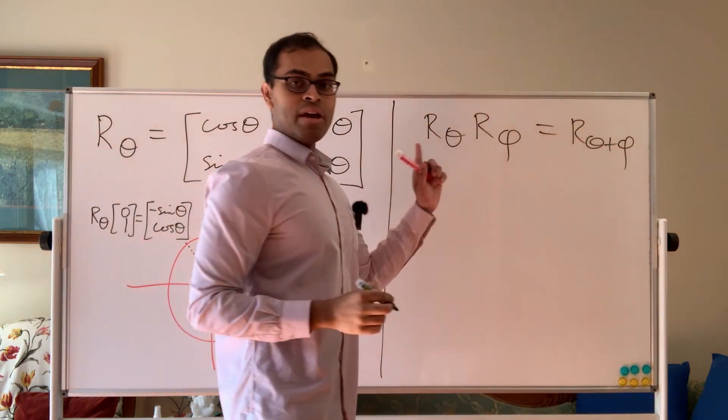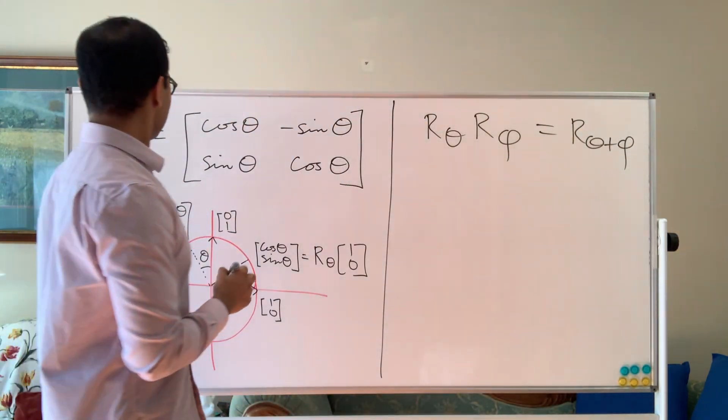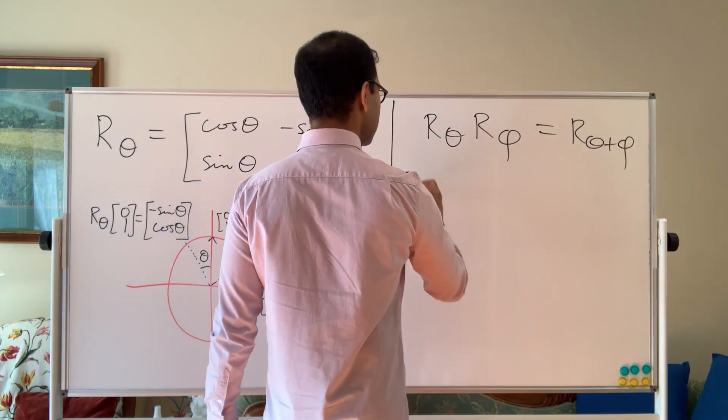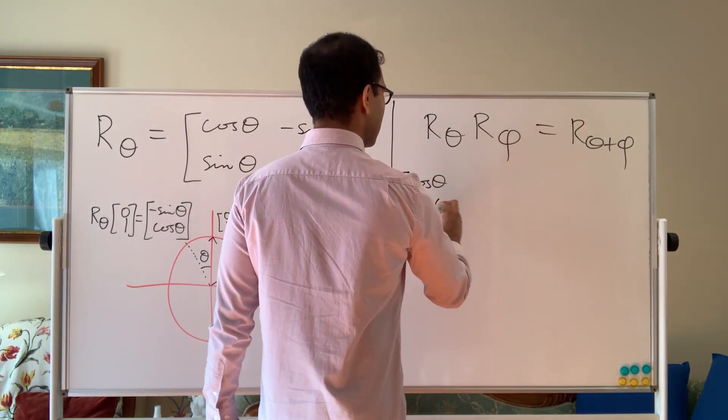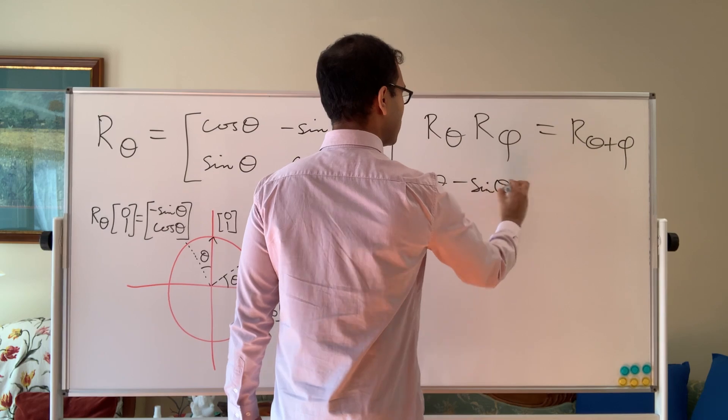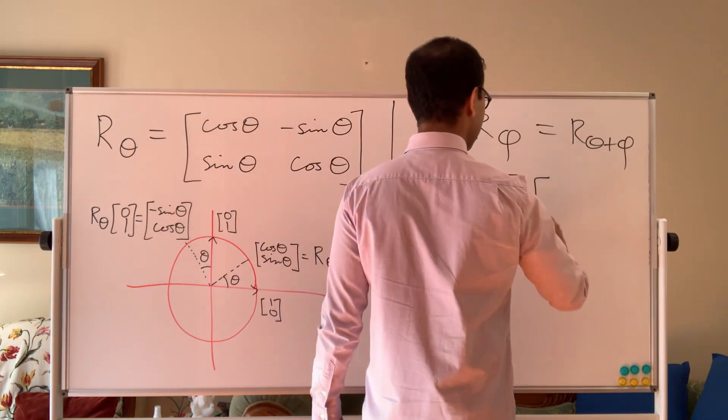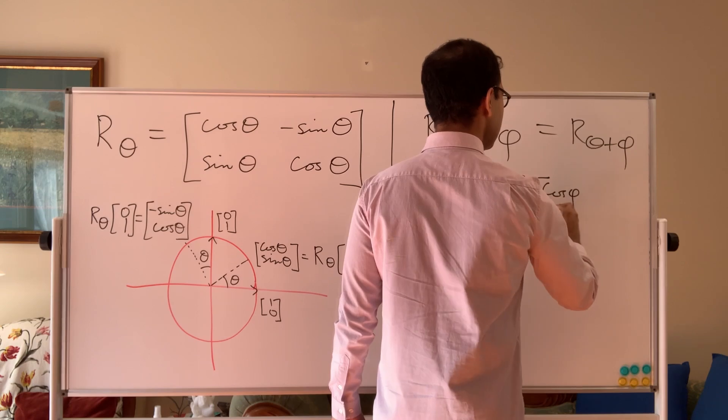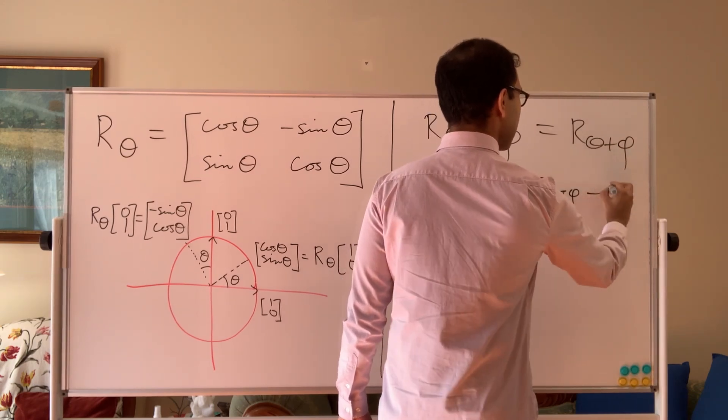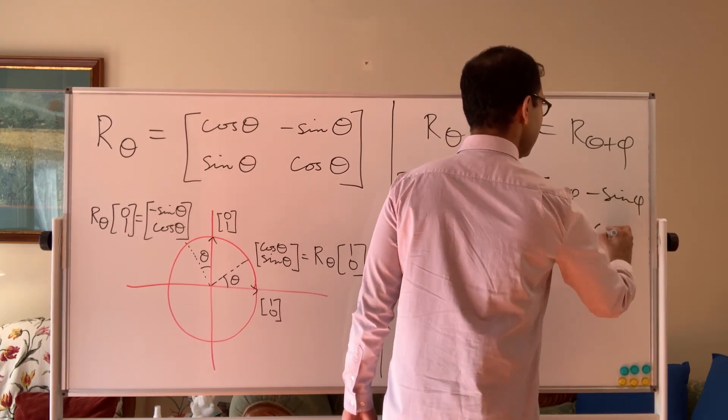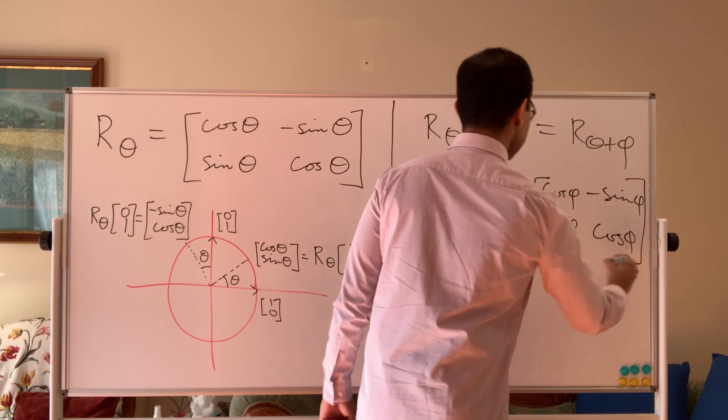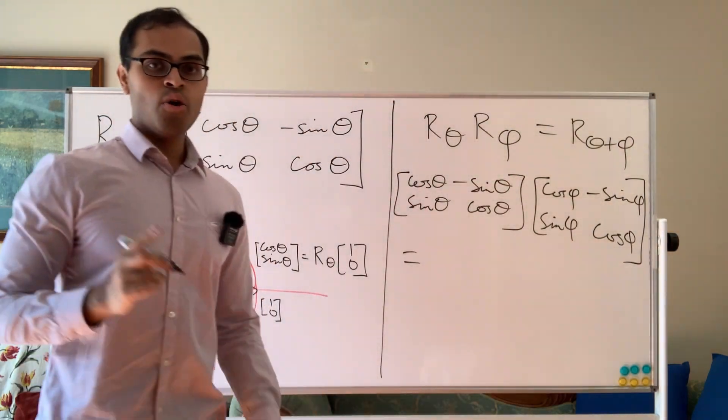So this is going to equal to the rotation by theta plus phi degrees. But now let's do matrix multiplication to see what's going on here. Matrix multiplication, we're going to get cosine theta sine theta minus sine theta cosine theta. And I want you to follow along here, play around with the matrix multiplication. Cosine phi sine phi minus sine phi cosine phi. And now if you multiply these two out, what are you going to get?